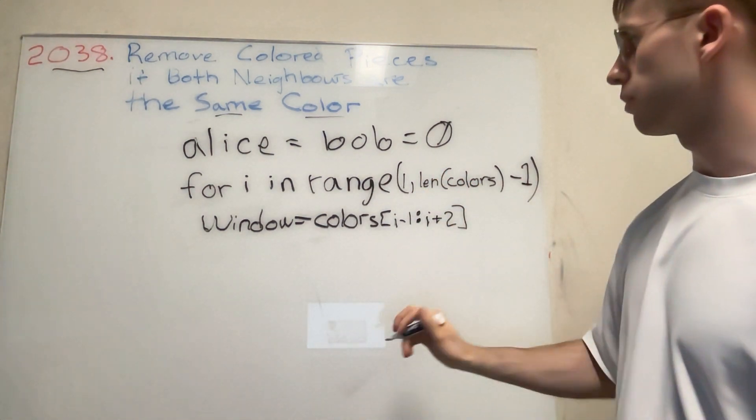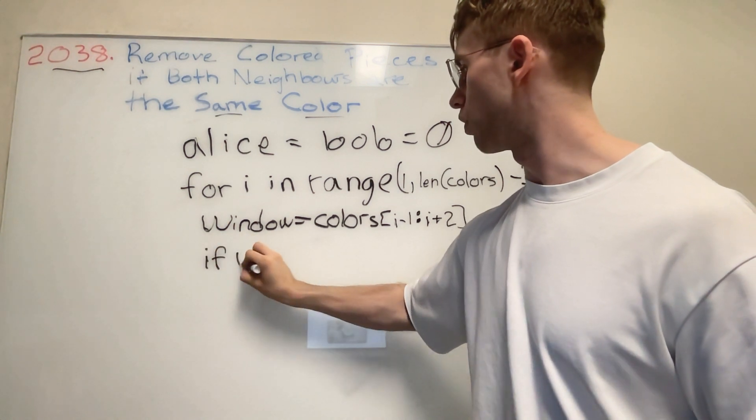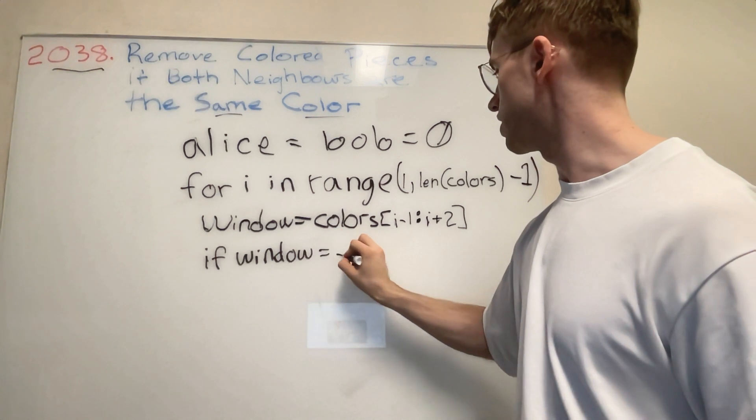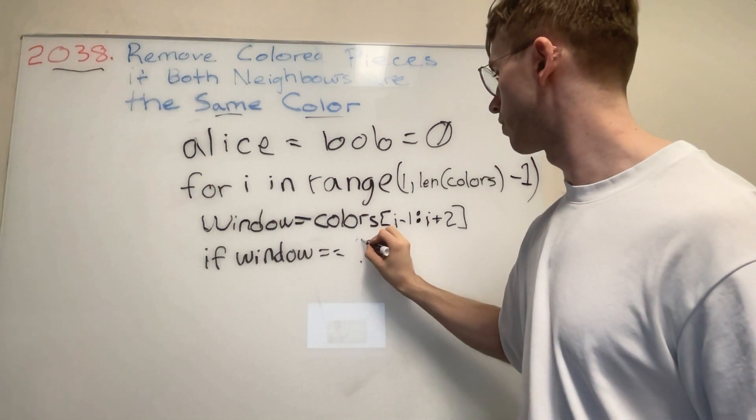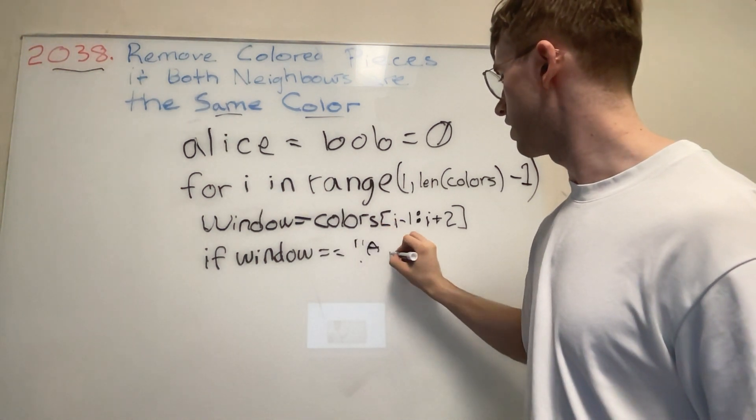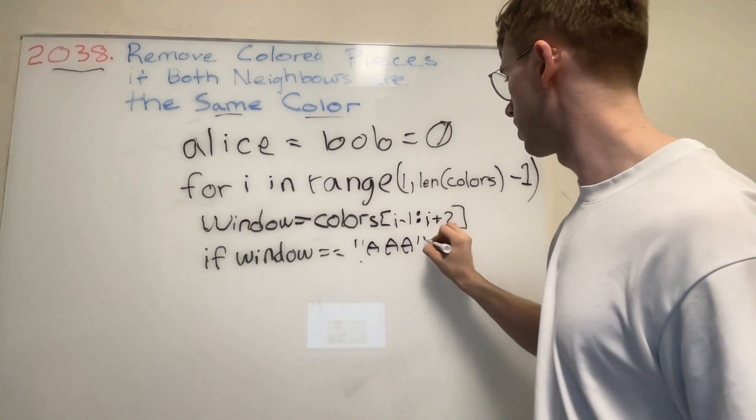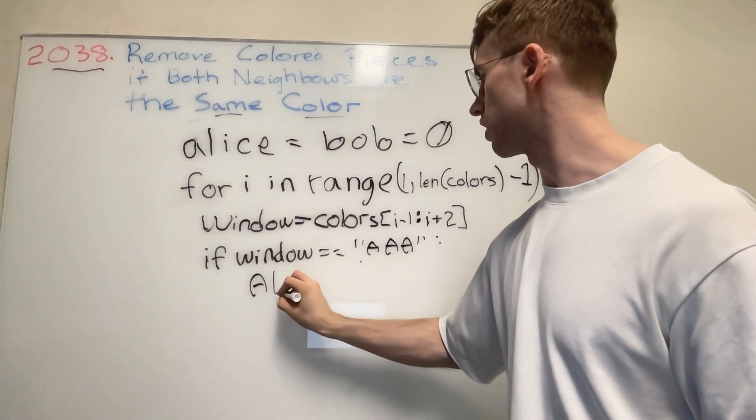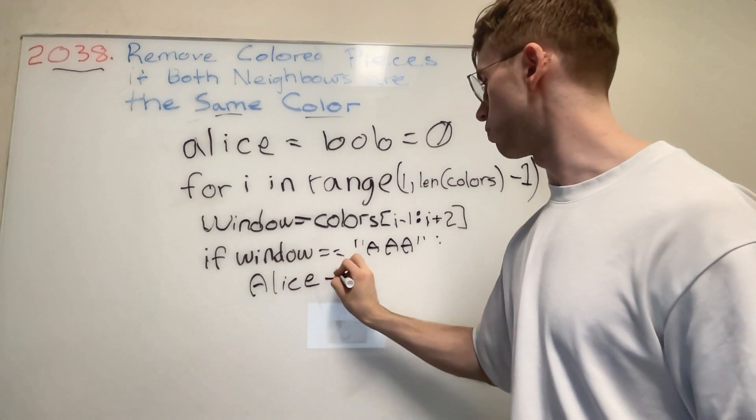So all that we have to do here is if our window is equal to AAA, then basically Alice gets a point, so we're going to add one.